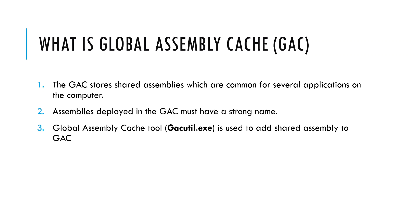What is the Global Assembly Cache (GAC)? The GAC is used to store shared assemblies which are common to several applications on the computer. Assemblies deployed in the GAC must have a strong name. There is a tool — GacUtil.exe — which is used to add the shared assembly to the GAC folder.